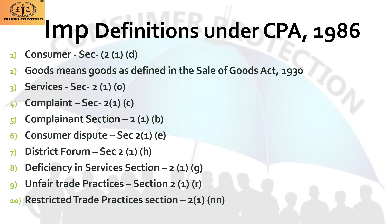The next definition is 'goods.' Goods are not defined in the Consumer Protection Act, but under Section 2(7) of the Sale of Goods Act 1930, goods means every kind of movable property other than actionable claims and money, including stocks, shares, growing crops, grass, and things attached to land agreed to be severed before sale. 'Services' under Section 2(1)(o) of CPA means any description of service made available — like banking, financial, insurance, transport, processing, supply of electrical energy, board or lodging, or any other kind of service.